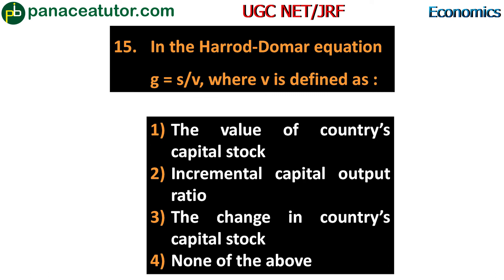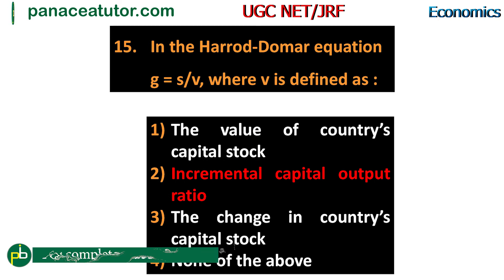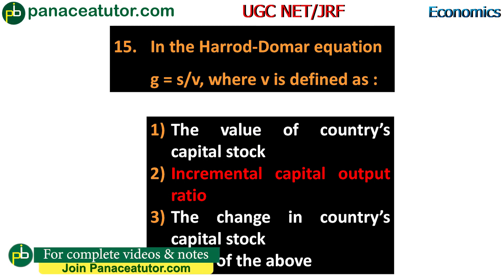Next question: in the Harrod-Domar equation G = S/V, where V is defined as - first, the value of country's capital stock; second, incremental capital output ratio; third, the change in country's capital stock; fourth, none of the above. The answer is option two - V stands for incremental capital output ratio in the Harrod-Domar model. These were all very important questions that have been repeated many times in previous year exams.